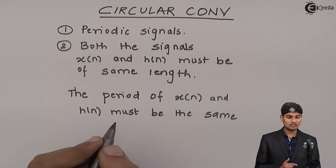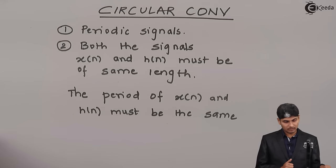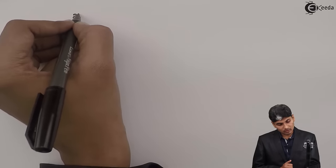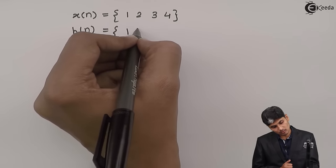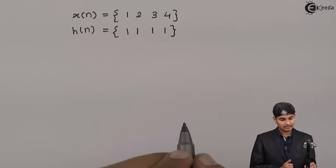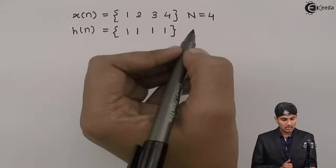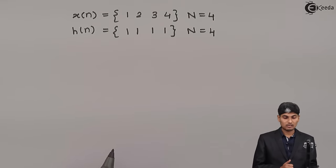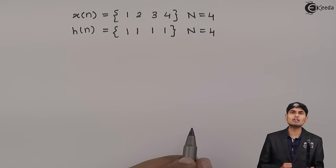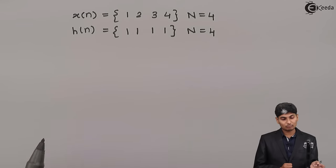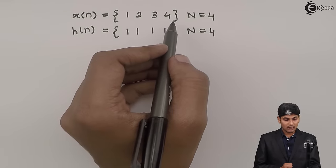If any of the conditions are not satisfied, then we must first satisfy them and then perform circular convolution. For example, if we have x of n as 1, 2, 3, 4 and h of n as 1, 1, 1, 1, then the period of this signal is 4, that is N is equal to 4, and here also N is equal to 4. The given condition is that the period of the signal is 4. In the question it should be mentioned that the signals are periodic, because looking at the sequence we cannot say whether the signals are periodic or non-periodic. These signals are periodic with a period of 4.